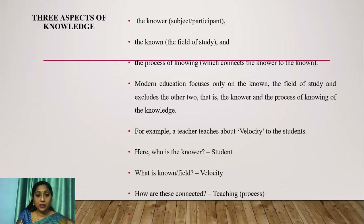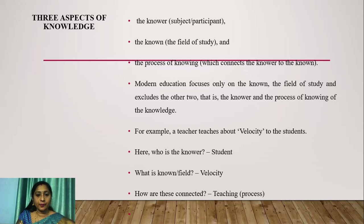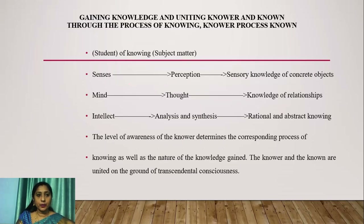For example, a teacher teaches about velocity to students. Here, the knower is the student, the known is the field — it is about velocity — and these are connected through the teaching process. So, gaining knowledge unites the knower and the known through the process of knowing.